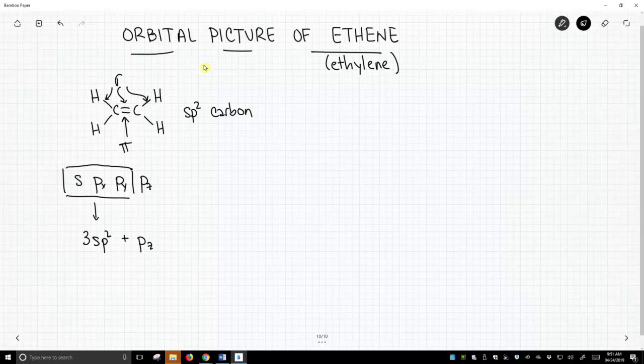Now, I've arbitrarily said it's going to be the pz, but we're going to pay attention to that when we draw this picture. So these three sp2s, they have bond angles of 120. This is going to be trigonal planar around carbon.